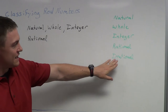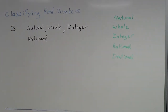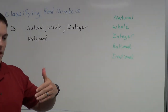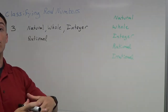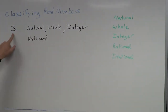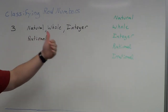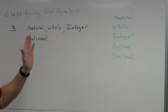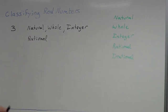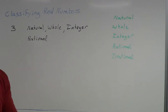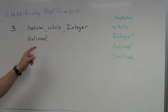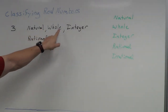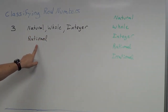Last but not least — irrational. Irrational numbers are the numbers that repeat forever and ever and don't have a pattern to them, similar to pi. Three is actually a terminating number — it just stops. There's only one digit, no repeating digits, so it is not an irrational number. What's confusing for some students is they think there's only one classification for a number — no, there can actually be multiple. Three is natural, it is whole, it is an integer, and it is a rational number.